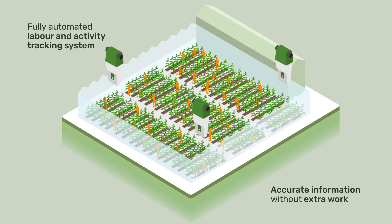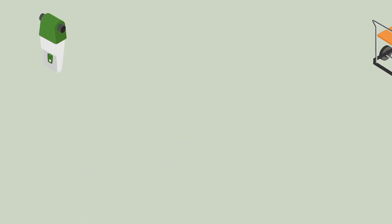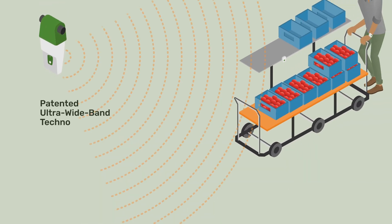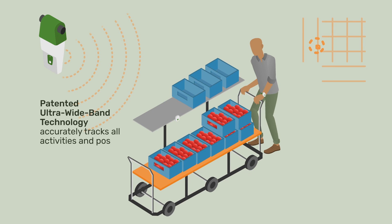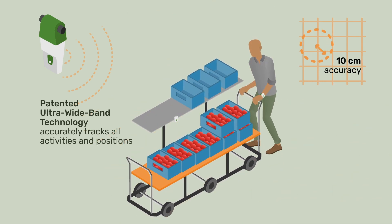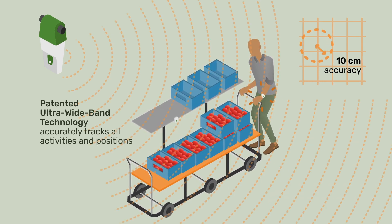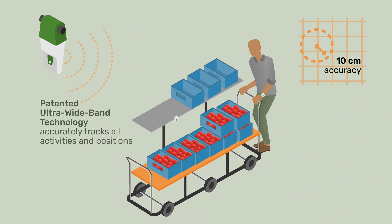Ritter CoRanger uses a patented ultra-wide band technology to accurately track and monitor positions of employees, harvest carts, and other objects in the greenhouse or packing hall.